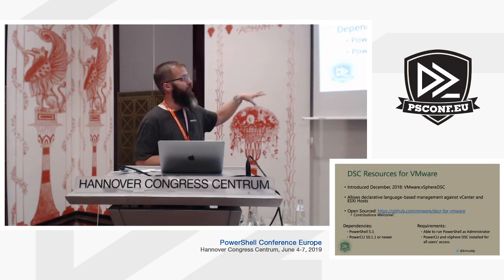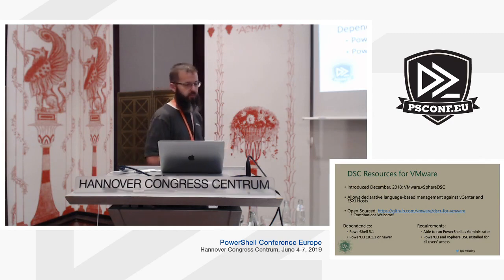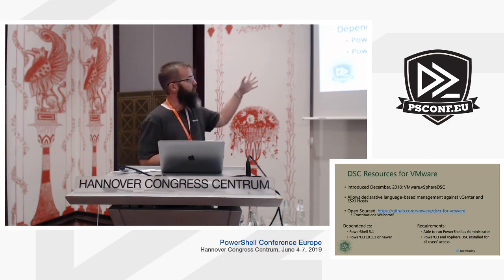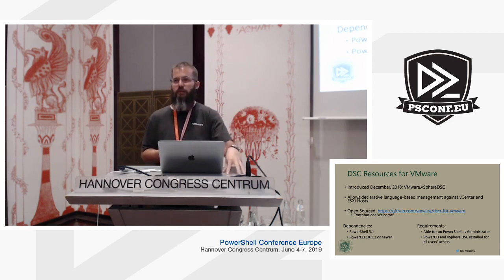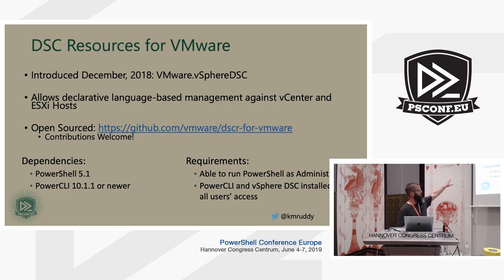The DSC resource project was released in December 2018 — literally the week before Christmas, which was a gift to me since I'd been sitting on it for about six months. Currently it works against vCenter Servers as well as ESXi hosts. It is open sourced — this is important because this is the first part of PowerCLI that's ever been open sourced in eleven years. It's on the official VMware GitHub because there were some issues with people not running things outside the company's proper GitHub repo.